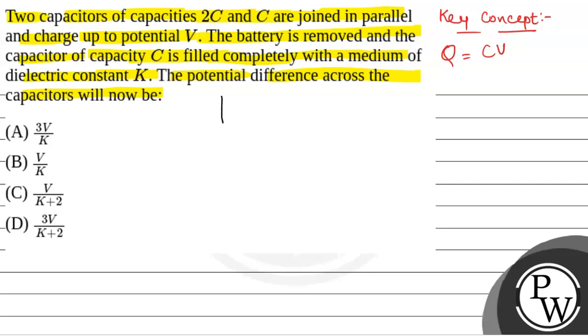We have been given two capacitors of capacitance 2C and C. Suppose this is a capacitor of capacitance 2C and this is a capacitor of capacitance C. They both are connected in parallel and they are charged by a battery of potential V.